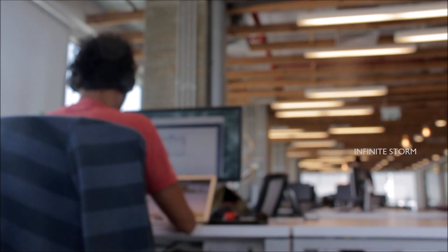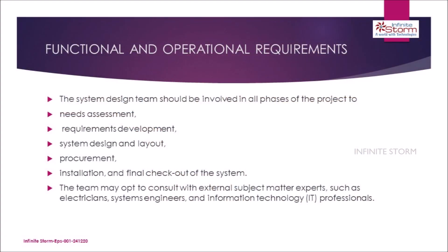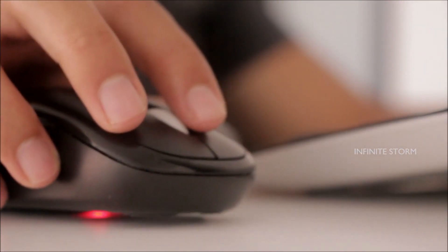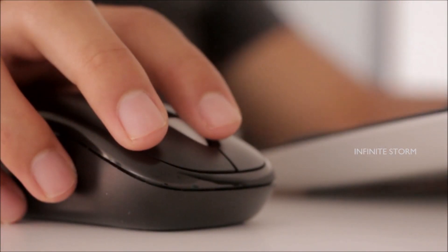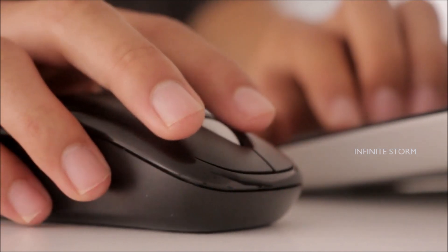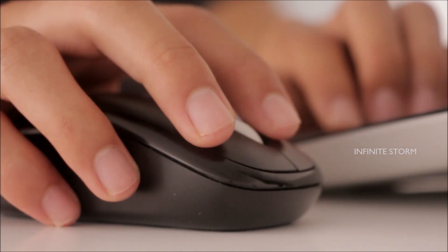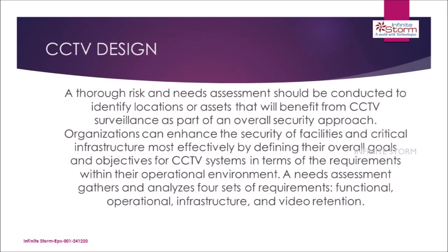Functional requirements consist of determining the area of surveillance. Operational requirements define what information a CCTV system will be expected to provide given the existing operating conditions, such as a perimeter area or an access point. The team may opt to consult with external subject matter experts, such as electricians, systems engineers, and information technology professionals. A thorough risk and needs assessment should be conducted to identify locations or assets that will benefit from CCTV surveillance as part of an overall security approach.